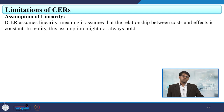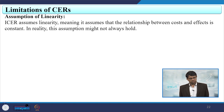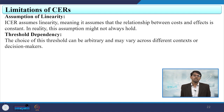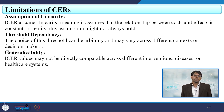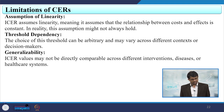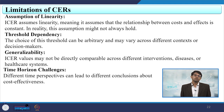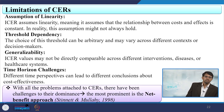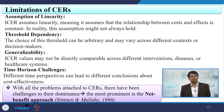However, there are limitations of cost-effectiveness ratios. First is the assumption of linearity — ICER assumes the relationship between cost and effect is constant, but in reality that assumption does not hold. Second is threshold dependency — the choice of threshold can be arbitrary and may vary across different contexts or decision makers. Third is generalizability — ICER values may not be directly comparable across different interventions or healthcare systems. Fourth is time horizon challenges — different time perspectives can lead to different conclusions about cost-effectiveness.